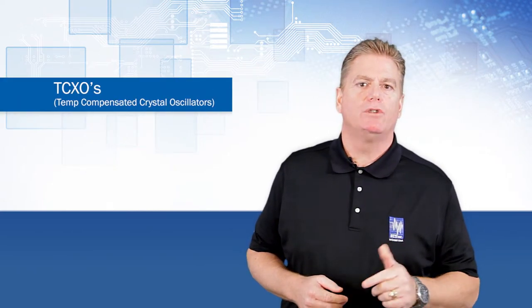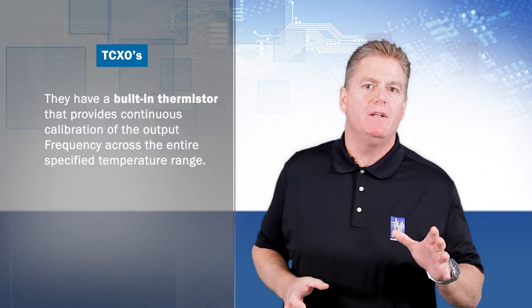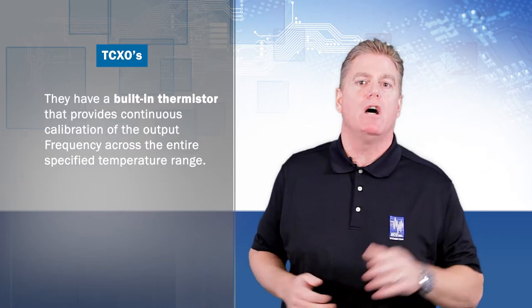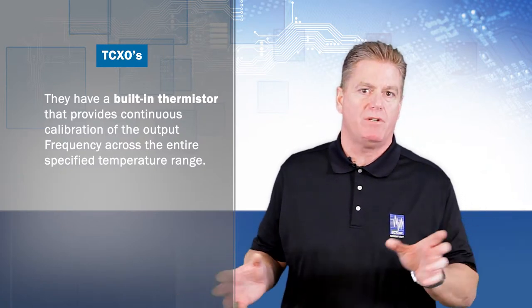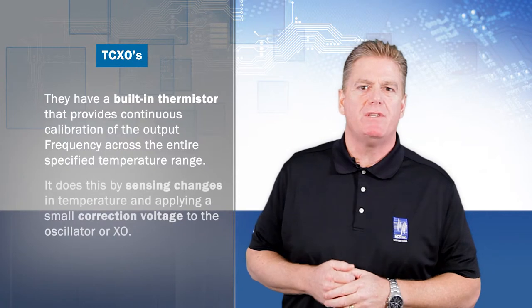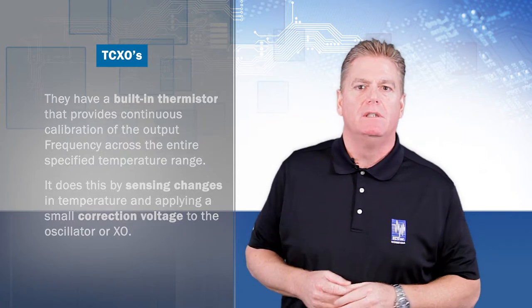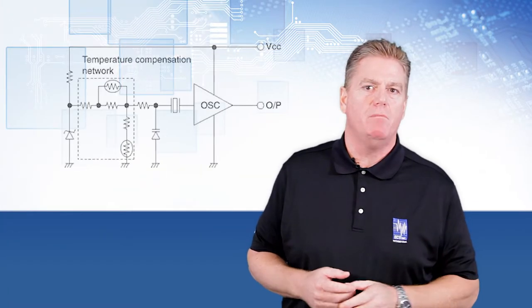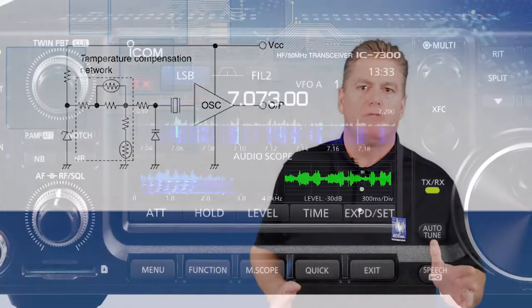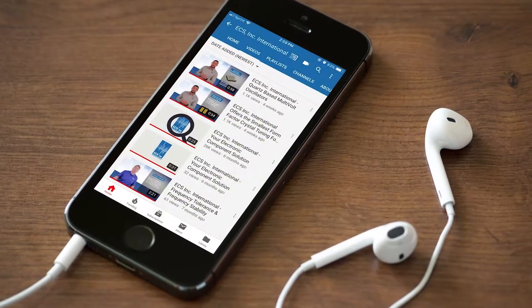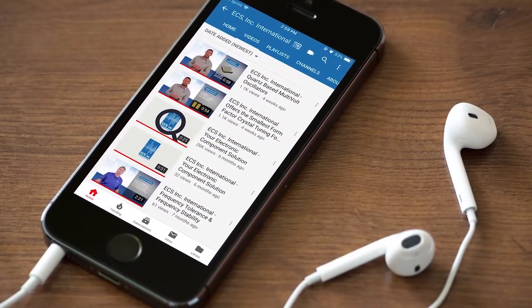Let's move on to TCXOs. TCXOs are temperature compensated crystal oscillators. They are unique in that they have a built-in thermistor that provides continuous calibration of the output frequency across the entire specified temperature range. It does this by sensing change in temperature and applying a small correction voltage to the oscillator. TCXOs are used in many RF communications applications, like radios, networking communications, and cell phones, and offer stabilities down to half a part per million.